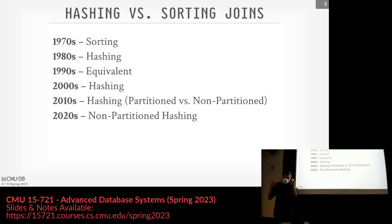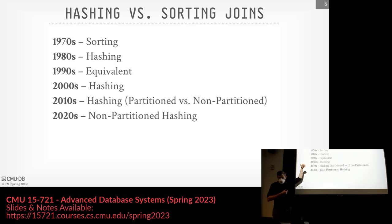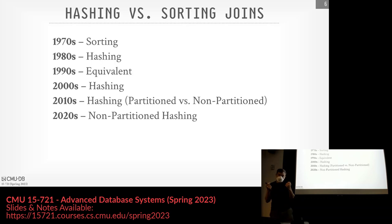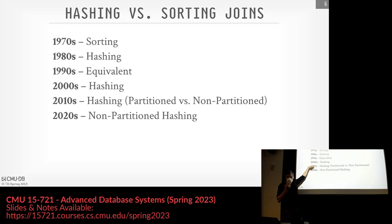In the 1990s there was a paper by Goetz Graefe — the inventor of the volcano approach — who said the algorithms were equivalent, no major performance difference between the two. Then in the 2000s, for the last two decades, hashing has been the dominant approach, a byproduct of hardware getting faster and being clever about where data is stored in memory. In the 2010s the question was: should I partition or not partition my data before doing joins? In the current decade, no-partition is deemed the better one, but it's still worth understanding both approaches.